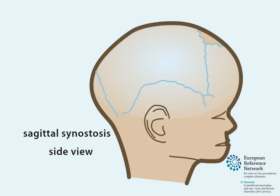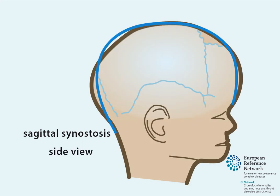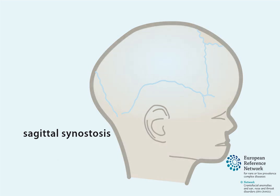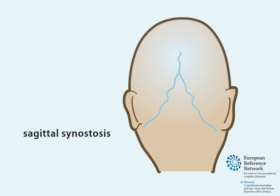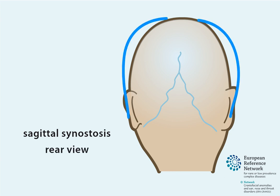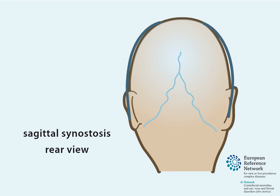From the side, the head appears long with a prominent forehead and a bulging occiput. The highest point of the head is often seen at the front, which is called anterior displacement of the vertex. At the back of the head, the occiput might be pointed, which is referred to as an occipital bullet.